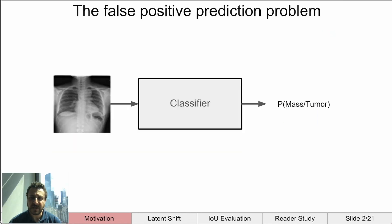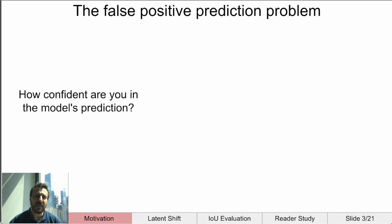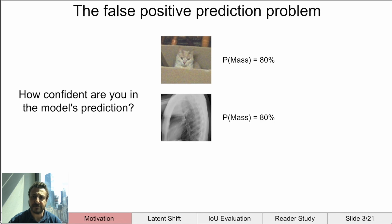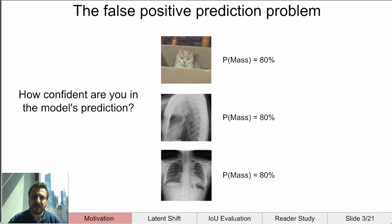Let's look at an example. We have a model that takes a chest x-ray and predicts if the patient has a mass present. A mass might indicate a tumor and is generally defined by a light-colored region where there shouldn't be one. How confident are you in these predictions from the model? You might be inclined to trust the predictions more when you think it can be right, but you have no reason to.